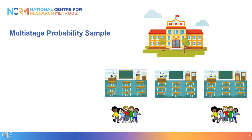Alternatively, a multi-stage probability sample involves the random sampling of units, and then the random sampling of subunits from within these units. Multi-stage probability samples are created in stages, hence the name multi-stage. A common example of this is the selection of geographic areas — for example regions, cities, or postcode areas — and then individuals are sampled from within these geographic areas.